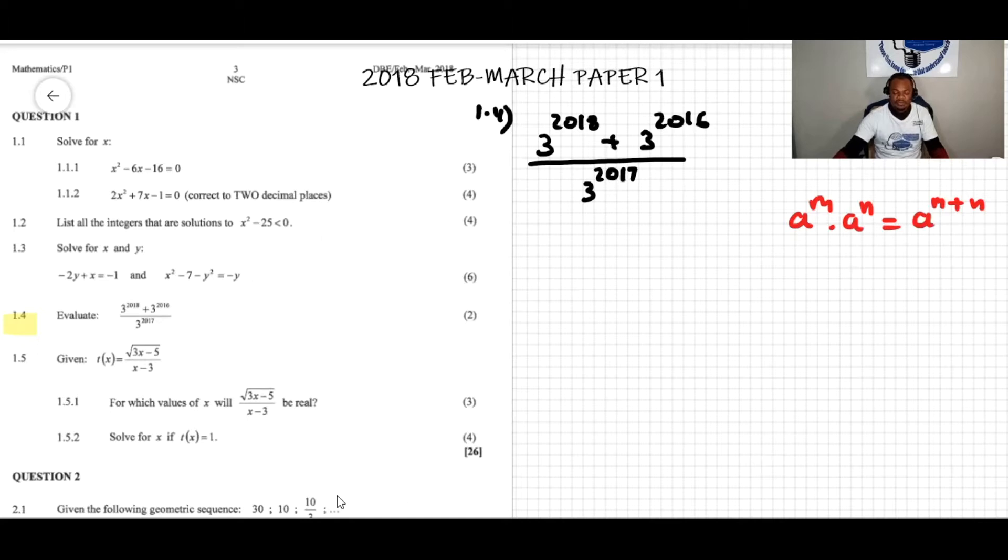3 to the power of 2018 can be written as 3 to the 2016 times 3 to the power of 2, because with the same base we can add exponents. When we have product of same bases, we just add exponents. If we add the two exponents here, 2016 and 2 gets 2018.